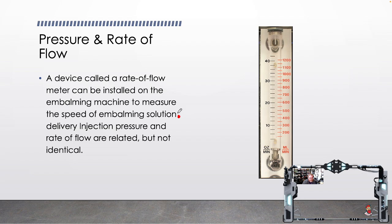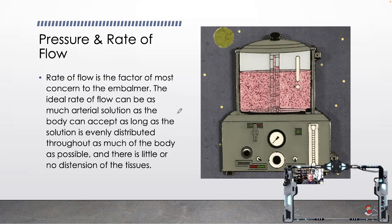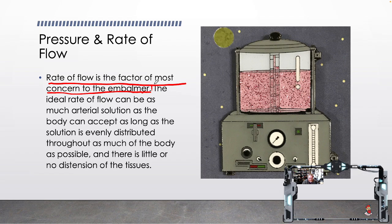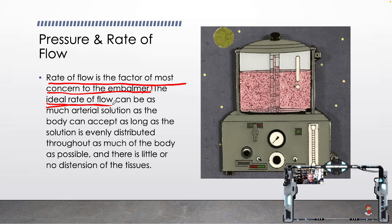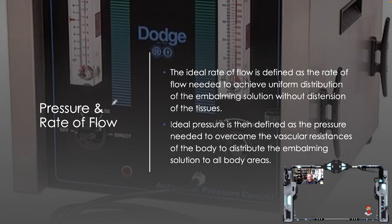Rate of flow is the factor of most concern to the embalmer — it is that important. The ideal rate of flow is as much arterial solution as the body can accept, as long as the solution is evenly distributed throughout as much of the body as possible with little to no distension of tissues. There is no magic number for ideal rate of flow — it's whatever the body can take so that you do the job well with no visible swelling. The ideal rate of flow is formally defined as the rate of flow needed to achieve uniform distribution of the embalming solution without distension of the tissue.